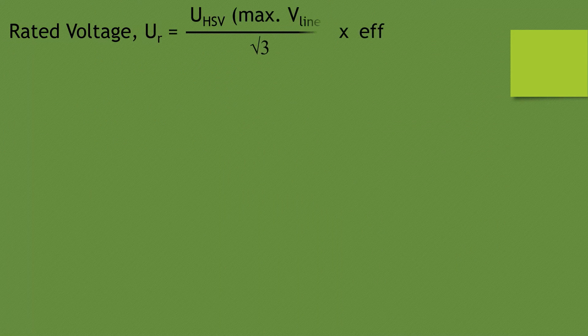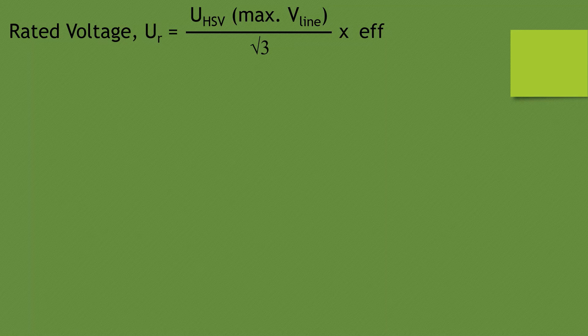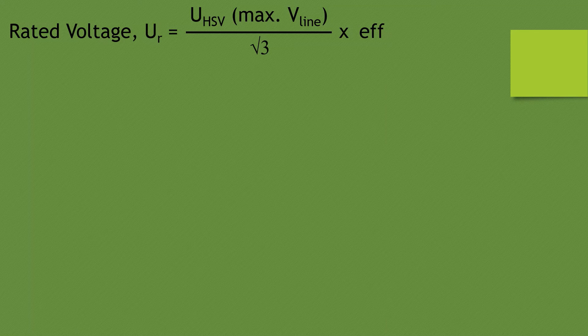Rated voltage can be calculated as highest system voltage divided by root 3 and multiplied with earth fault factor.